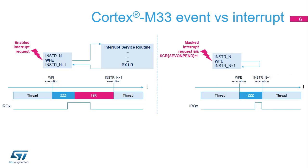Receiving an enabled interrupt request while the processor is in the WFE state causes the processor to wake up and execute the interrupt service routine. When the Cortex-M33 control bit called SEV-Unpend, which means Send Event Unpending, is set to 1, receiving an interrupt request related to a masked interrupt causes a wake-up event. In this case, the processor executes the next sequential instruction. Software may later decide to enable the next interrupt to be served.